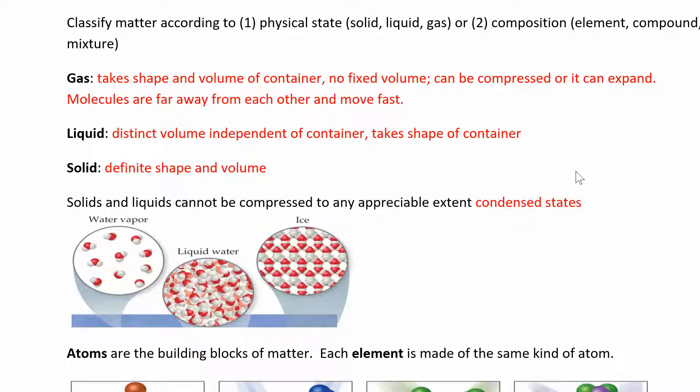A liquid has a distinct volume that's independent of the container. Suppose you had a one-gallon jug of milk and poured it into a trash can — the volume didn't change. You still have one gallon, but the shape changed. Liquids always take the shape of the container, but their volume is independent of the container, so they have a fixed volume.